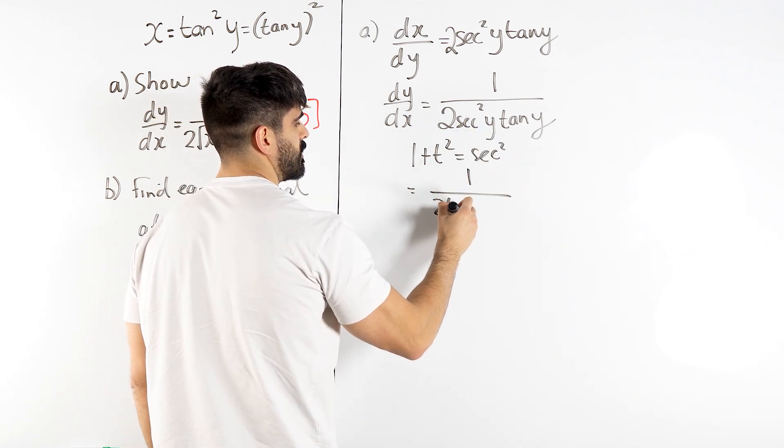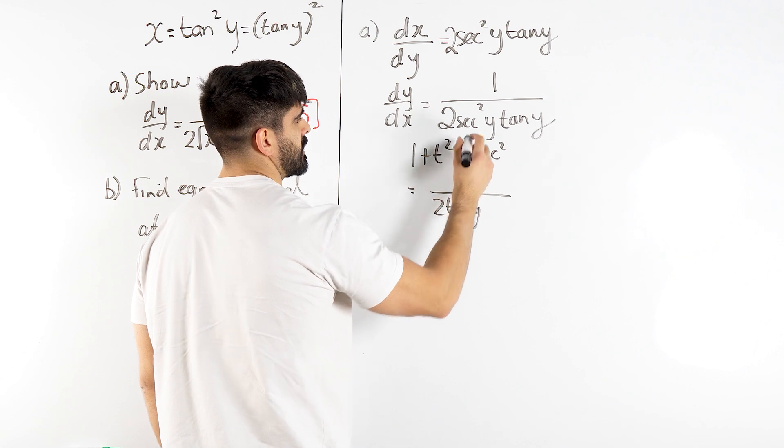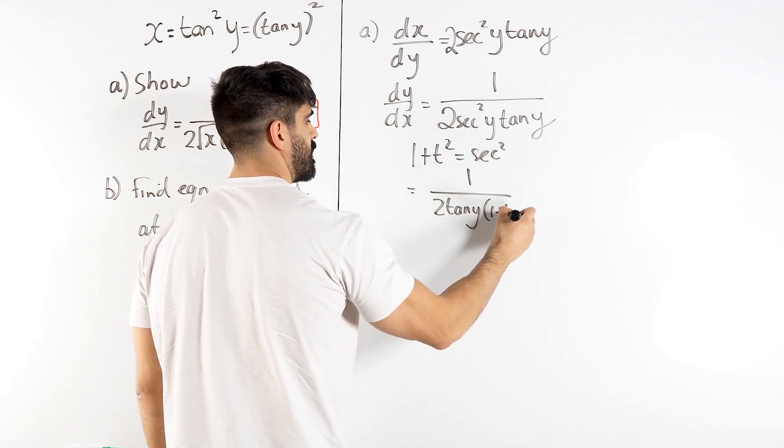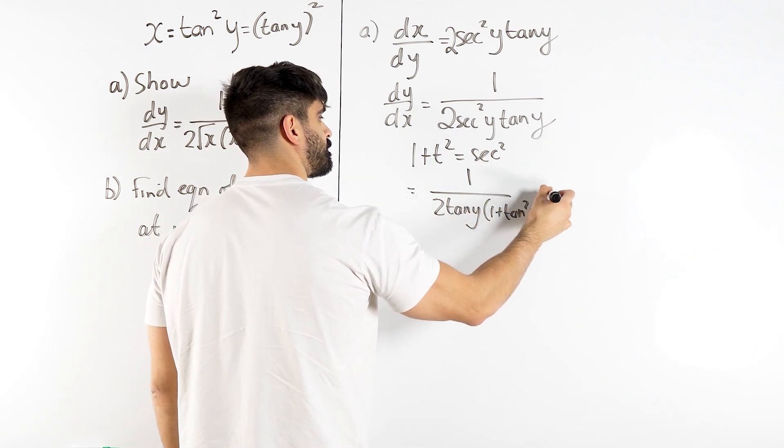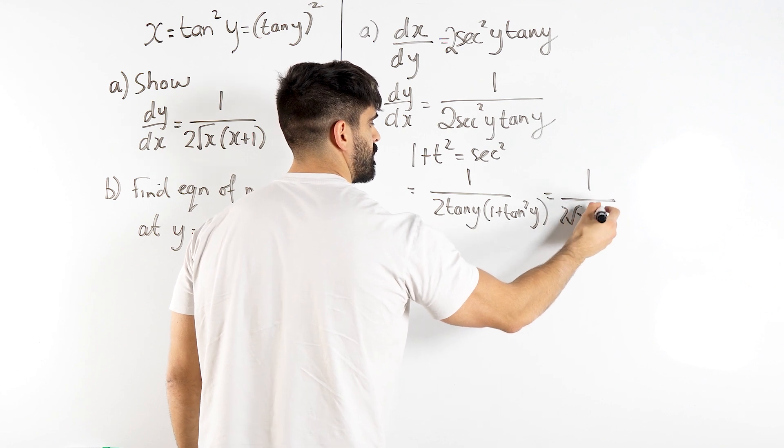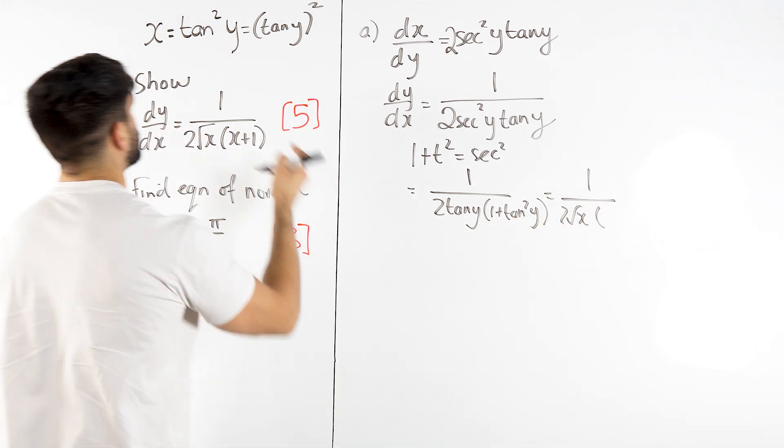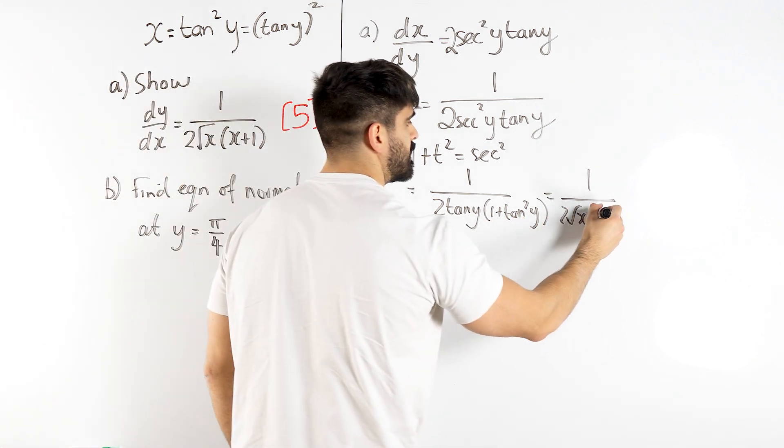So you have 1 over 2 tan y, then sec squared is 1 plus tan squared. We use the 1 over 2 root x, and then we get tan squared y which is x plus 1. Easy 5 marks.